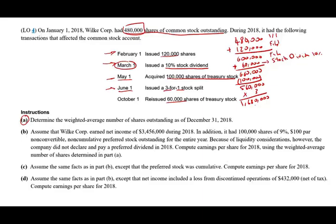Remember, once we have a stock split or stock dividend, it will have to apply to all the other shares going back to the beginning of the year. Then on October 1st, we reissued 60,000 shares, ending up with 1,740,000 shares. So basically: 480,000 plus 120,000 equals 600,000, then we added the 10% stock dividend, deducted 100,000 for treasury shares acquired, multiplied by 3 for the stock split, then added 60,000 shares. Now we need to weigh all these shares.